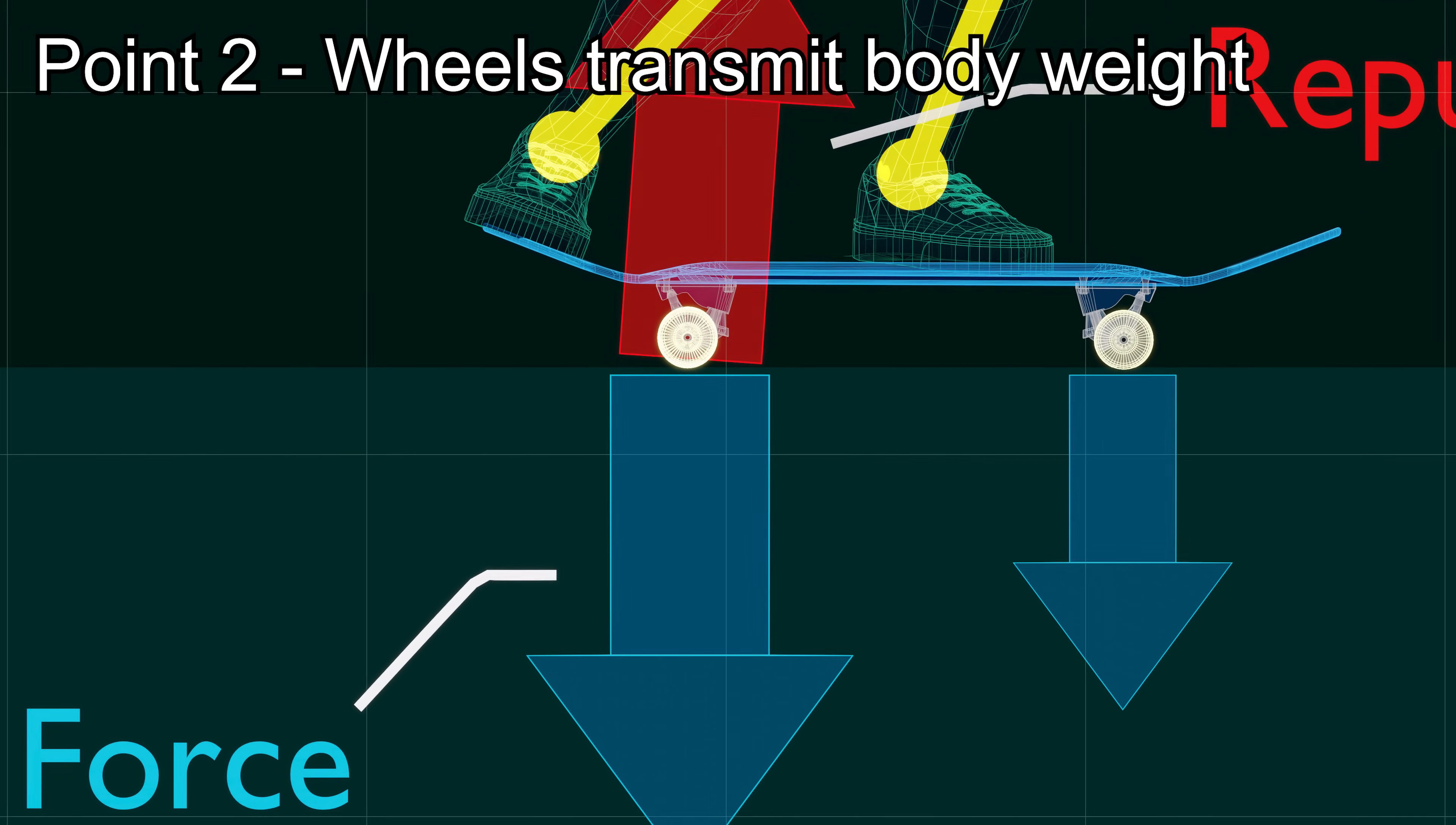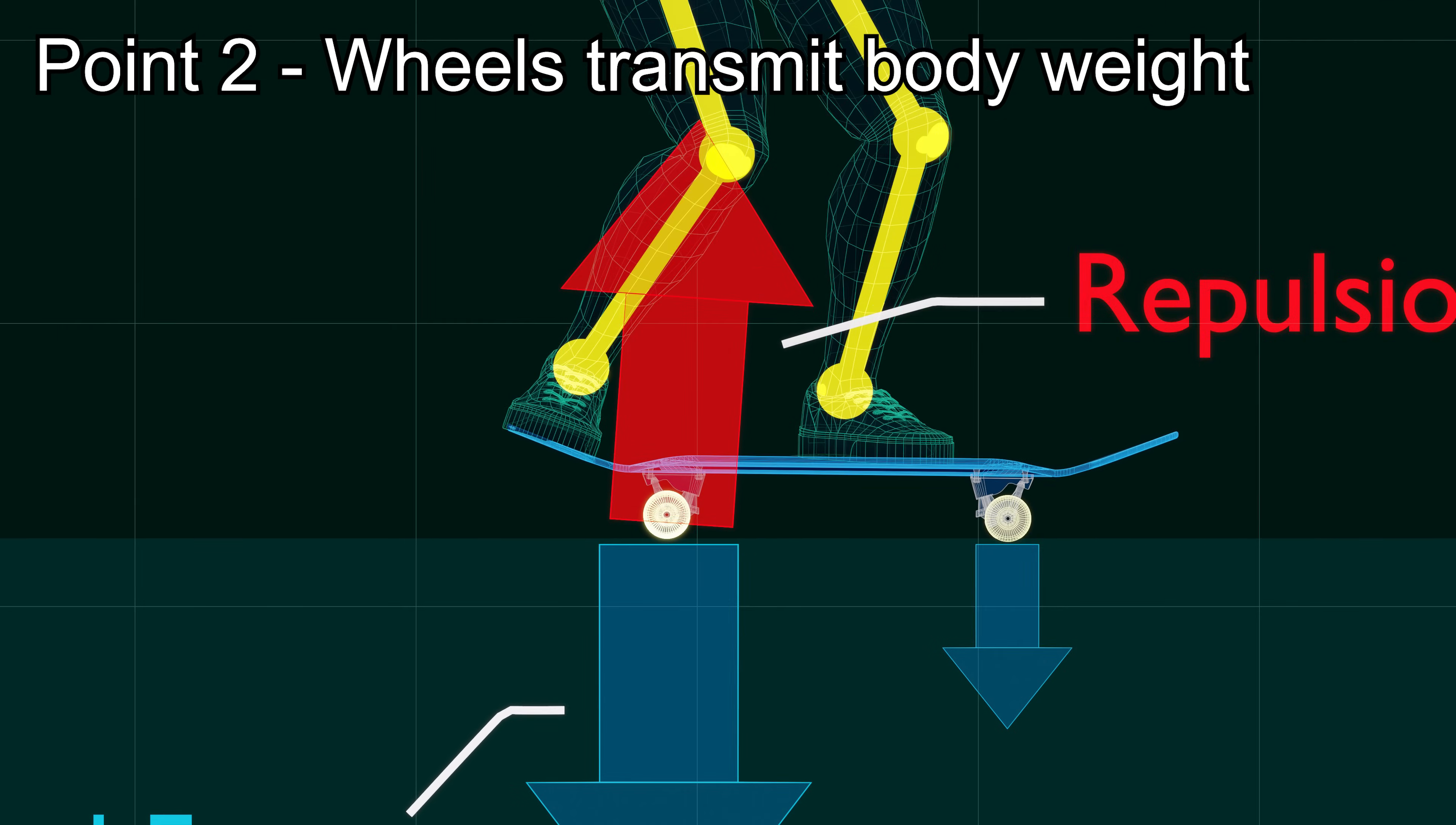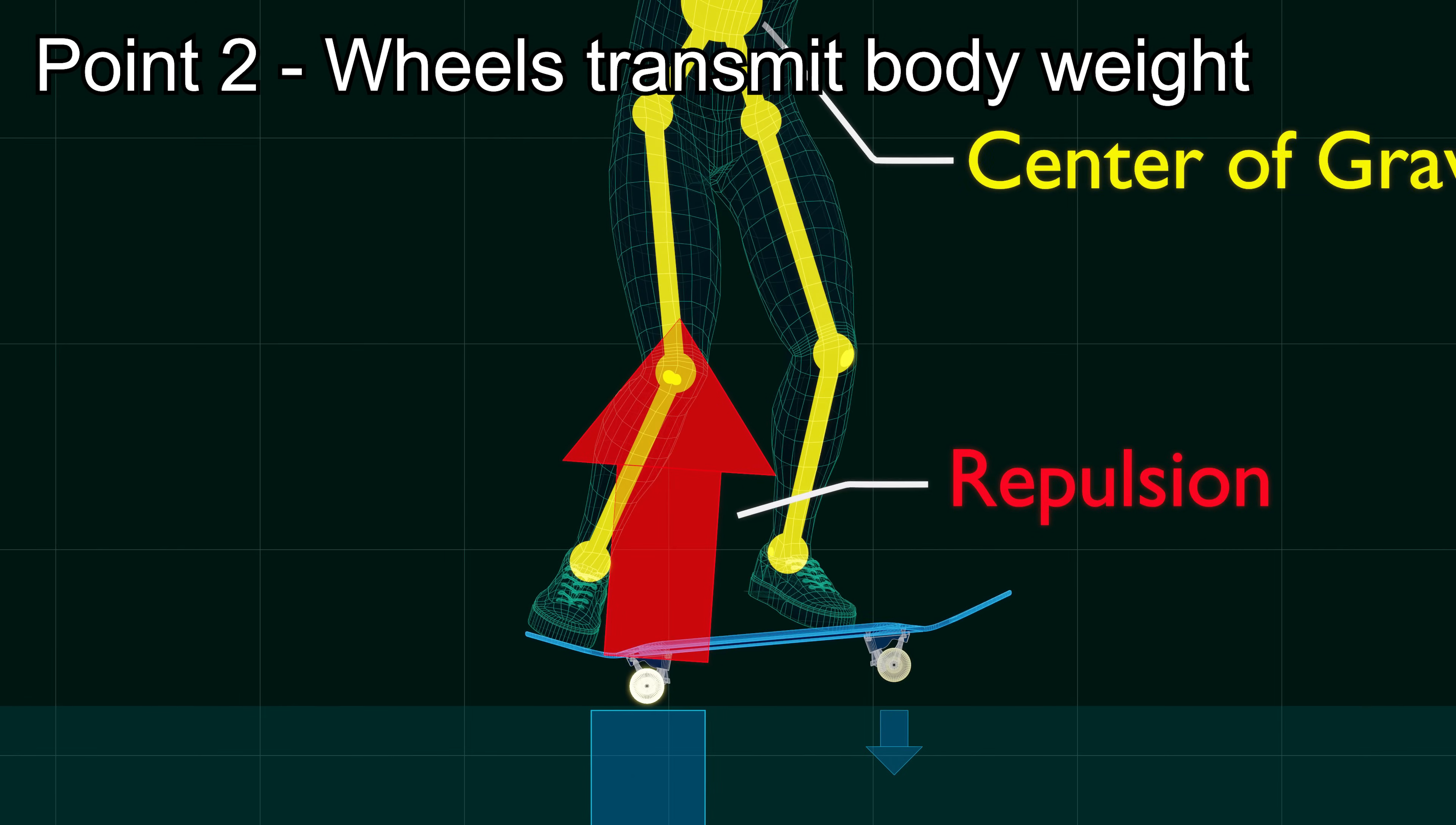Number two: In skateboarding, it is the wheels, not the tail, that transmits the force of the body weight pushing down on the ground.